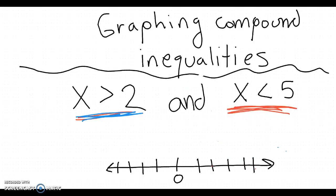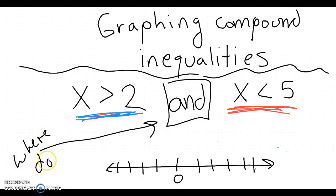Now and has a different meaning. And doesn't mean I get to graph both. And means graph both and see where they intersect. So and kind of says, where do they intersect? So that's what and says. Where do they intersect?